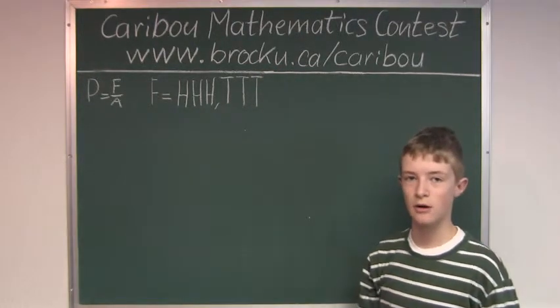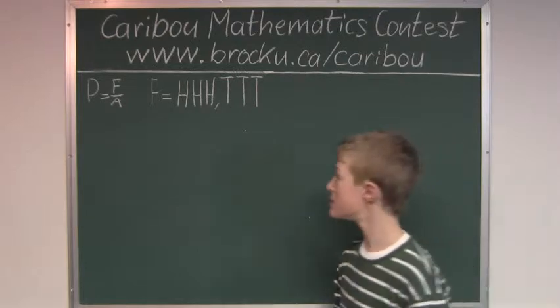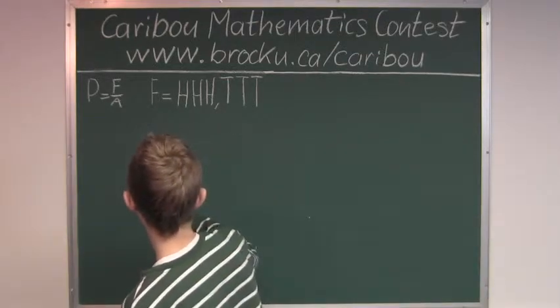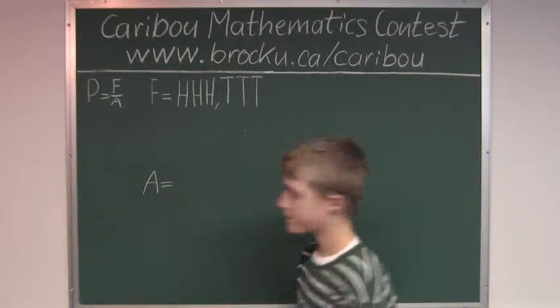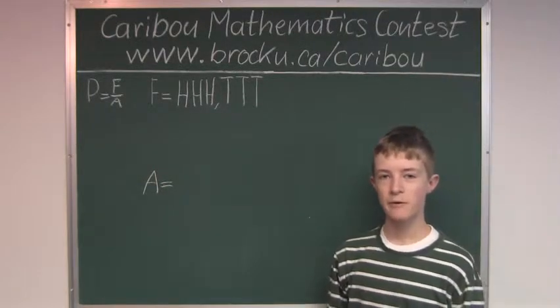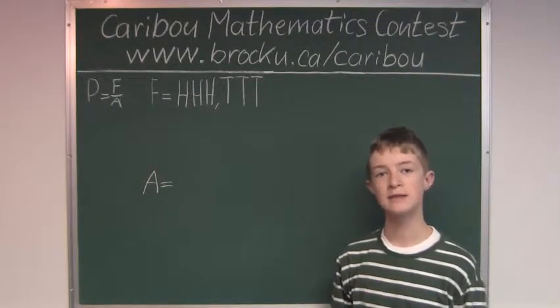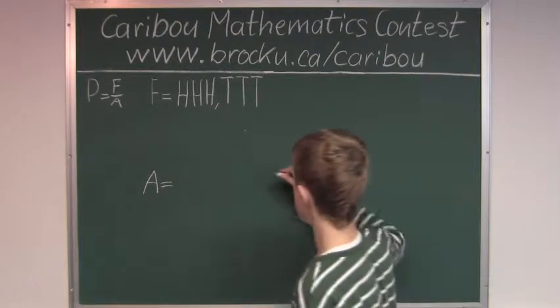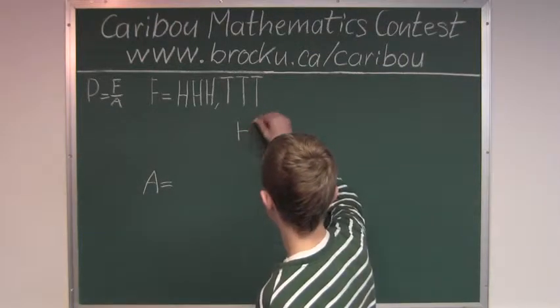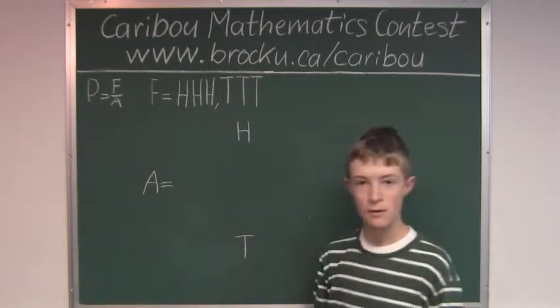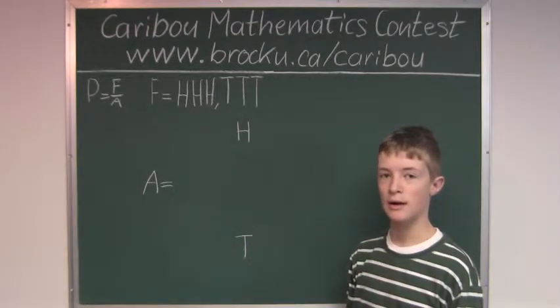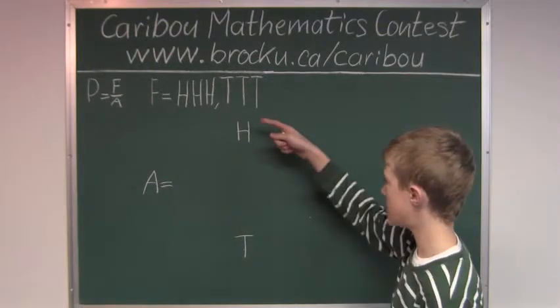So now we have to look for all possible events. The first coin can either show heads or tails. And then for the second coin, it can either show heads or tails for each of them.